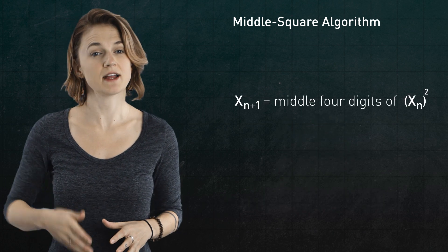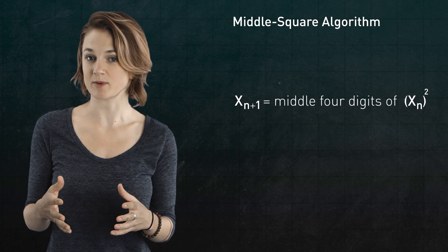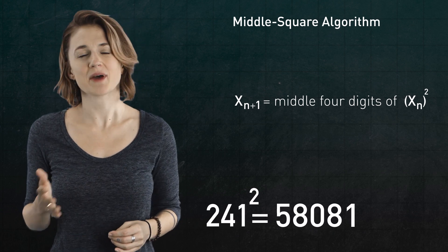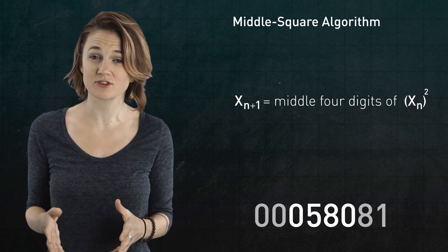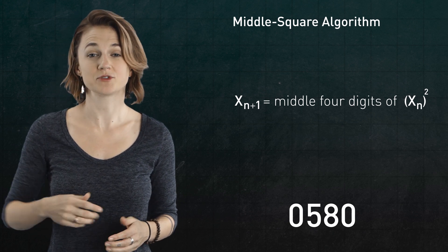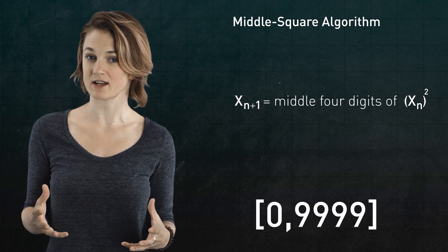For all n, define x sub n plus 1 as the middle four digits of x sub n squared. If the square has less than eight digits, pad it with leading zeros until it's eight digits long and extract the middle four. Starting with a four-digit seed, the middle square algorithm generates a sequence of random-looking numbers between 0 and 9,999.